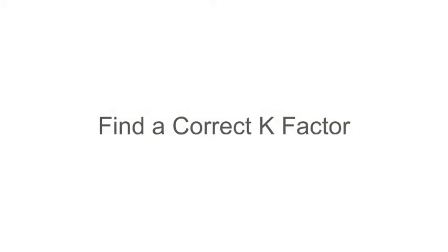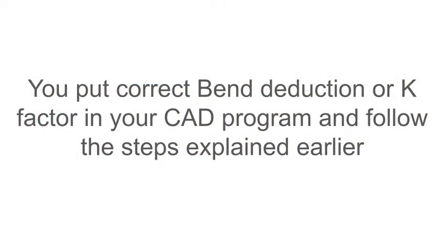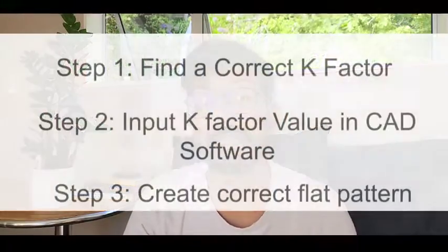Step number one for doing a perfect fold: find the correct k-factor for your material as supplied by your supplier. Step number two: after finding out the k-factor for your press brake, make sure that you enter that k-factor value or bend deduction value into the CAD software you are using — it doesn't matter whether you are using SolidWorks, Solid Edge, AutoCAD, or Inventor; all those softwares work on the basics of sheet metal and should give you the same result.